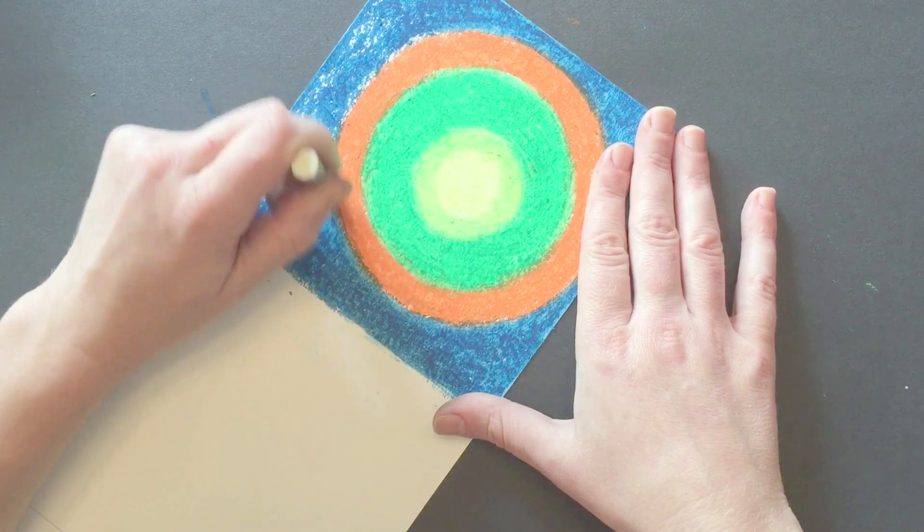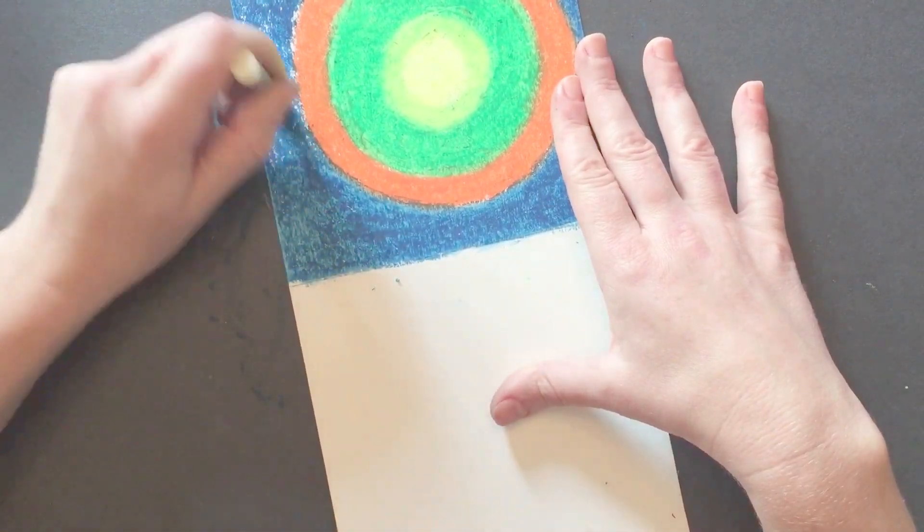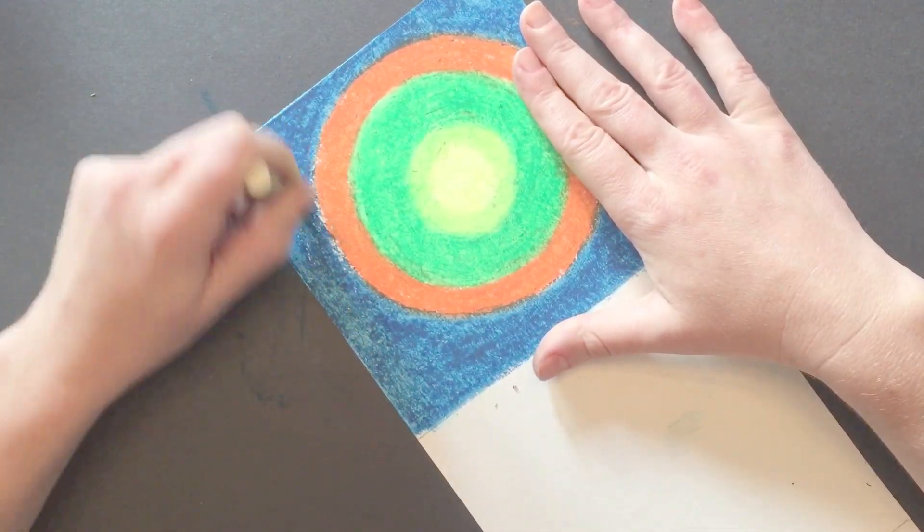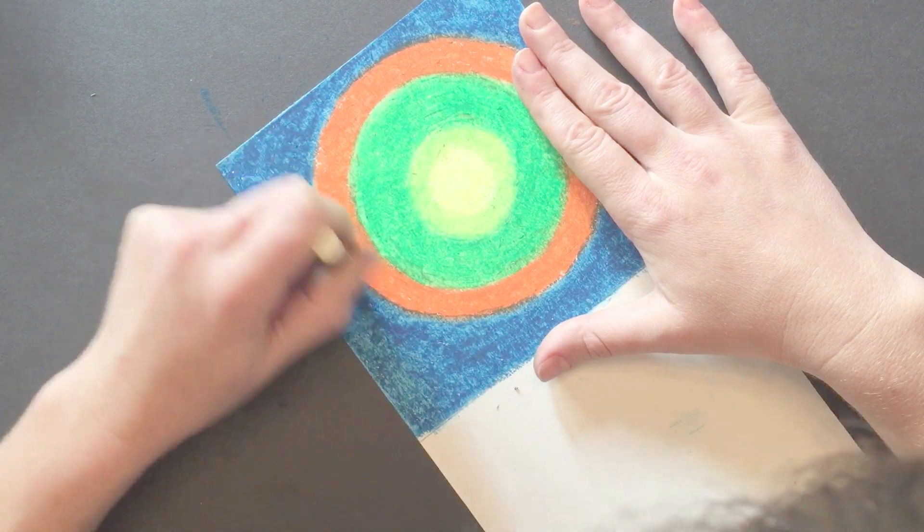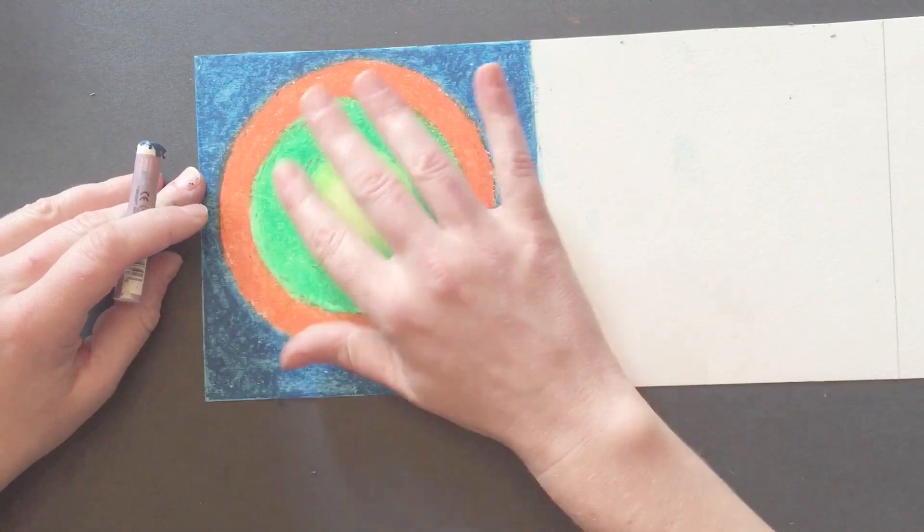Notice how I am only coloring in one colored section at a time. You don't want to color across colored sections or you will drag the colors into each other. Now my dot looks super smooth.